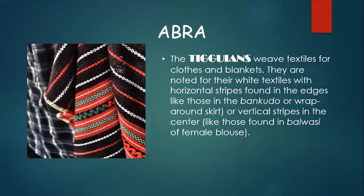The next textile can be found in Abra. The Tinguian weave textiles for clothes and blankets. They are noted for their white textiles with horizontal stripes found in the edges, like those in the bangkudo or wrap-around skirt, or vertical stripes in the center like those found in baluasi or female blouse. The Tinguian designs are very meaningful for the people of Abra. Some of their textiles are reserved for special occasions such as birth giving, weddings, and harvesting.